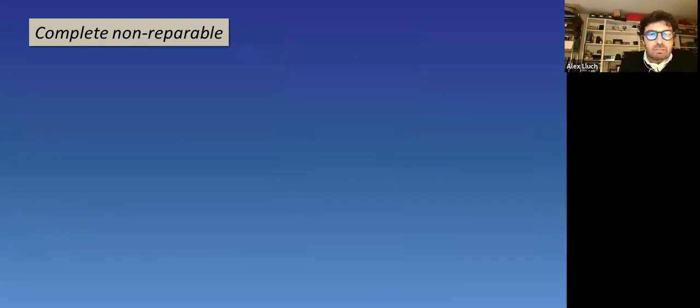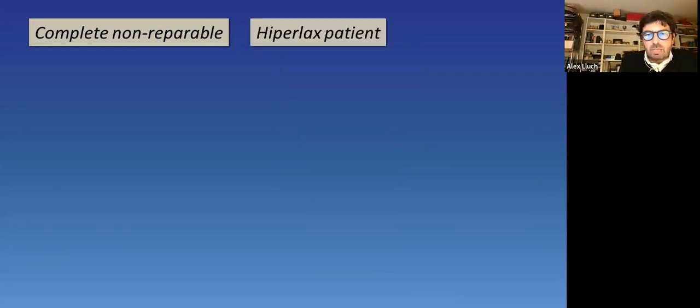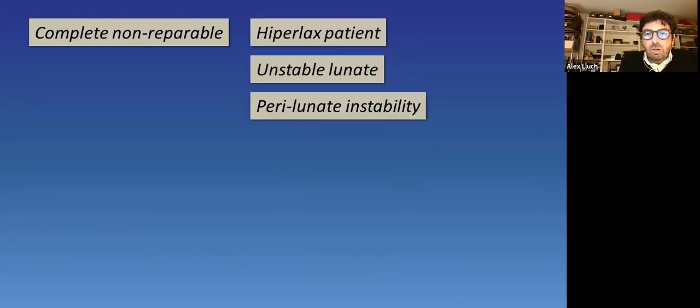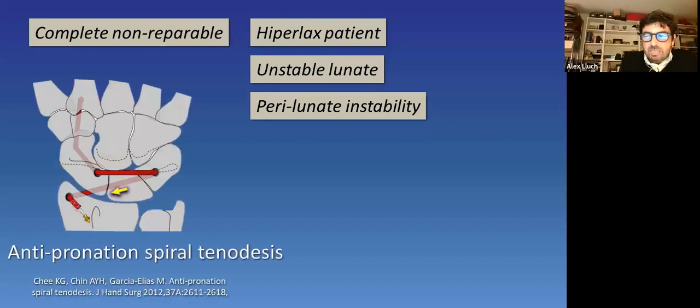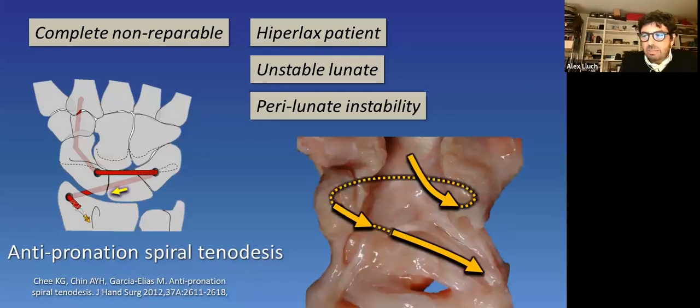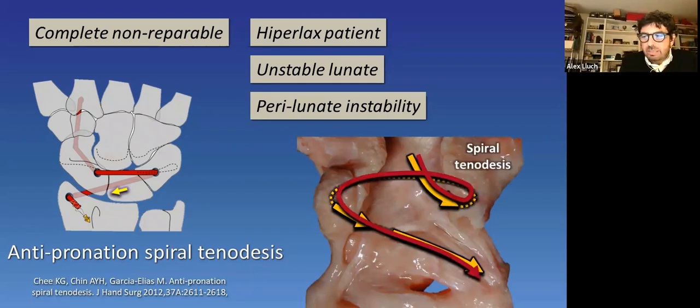But we have mentioned different situations in a complete non-reparable lesion. Indeed, it is different from what we have just described if we have a hyperlax patient, if we have an unstable lunate, or if we have a chronic perilunate instability. In such cases, we would propose the so-called anti-pronation spiral tenodesis. If just part of the anti-pronation ligament complex was reconstructed with a 3LT or with a Corella's technique, the aim of the spiral technique is reconstruct the whole complex.